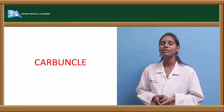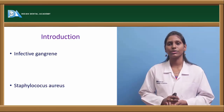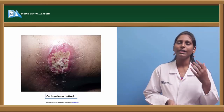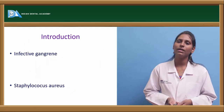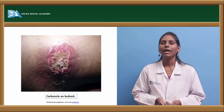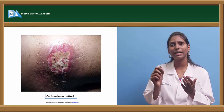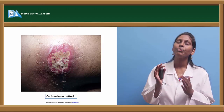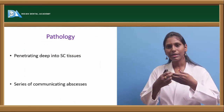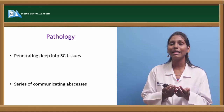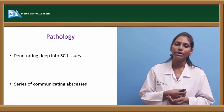Carbuncle is an infective gangrene of subcutaneous tissues caused by Staphylococcus aureus. Common locations are the nape of the neck, buttock, and back. Examining the affected area reveals multiple sinus openings through the skin, causing a sieve-like or cribriform appearance — this is the pathognomonic feature of carbuncle.